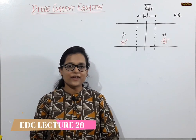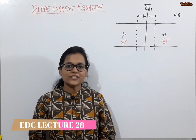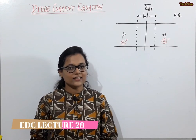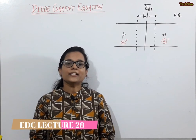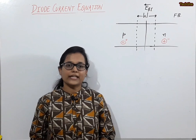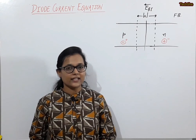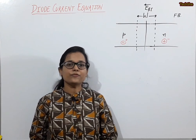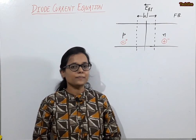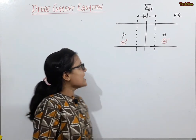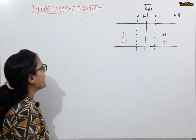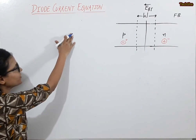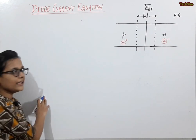Hi everyone, I am Shifali. In the last lecture, we covered the mathematical expression for the electric field inside the depletion layer and the expression for the width of the depletion layer. In today's lecture, we will find the current equation for a PN diode.